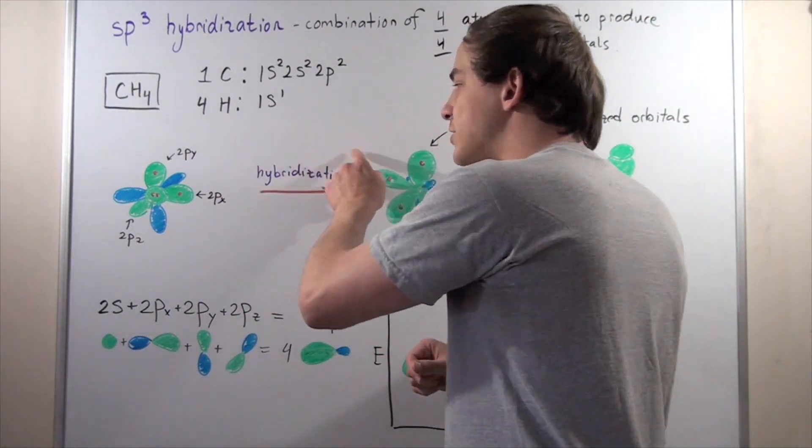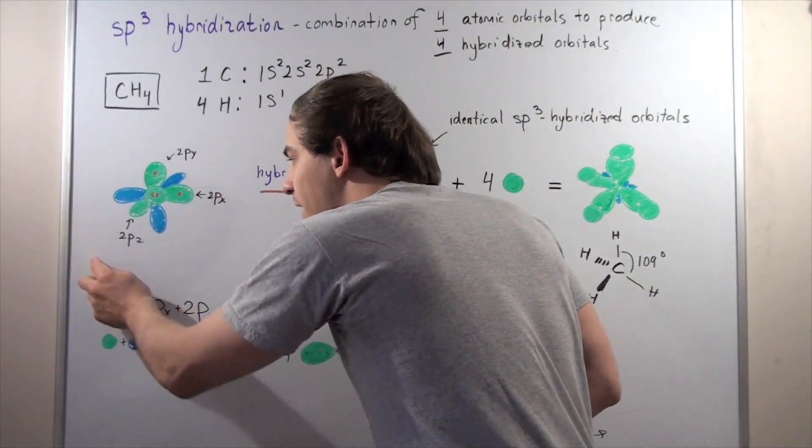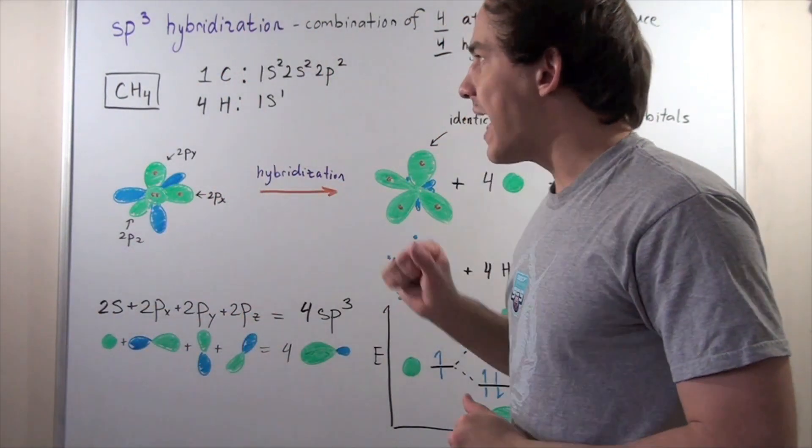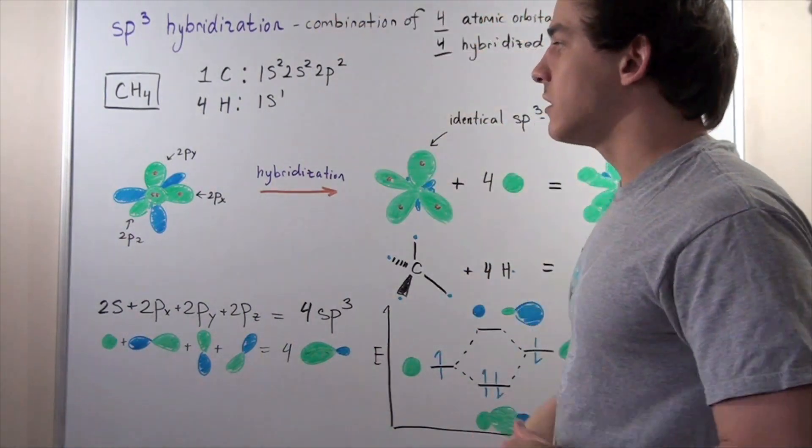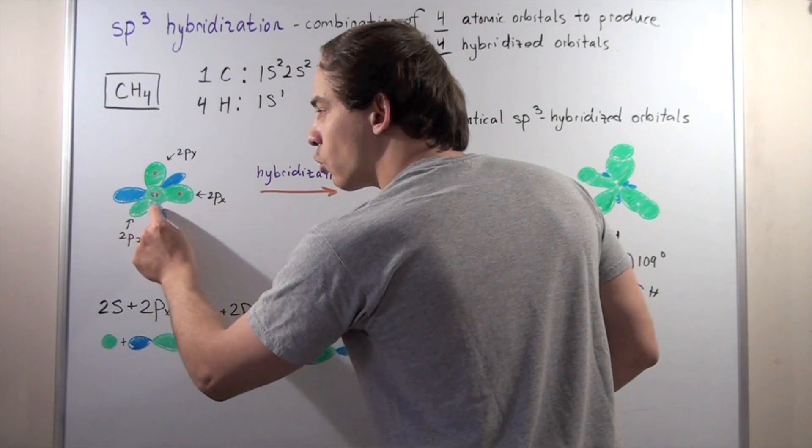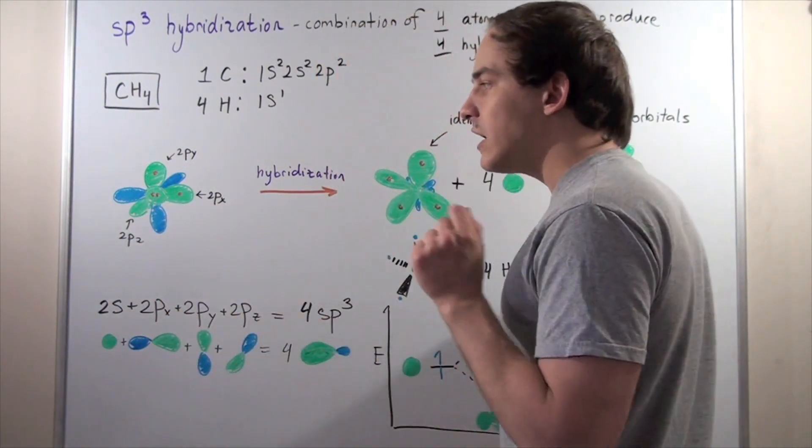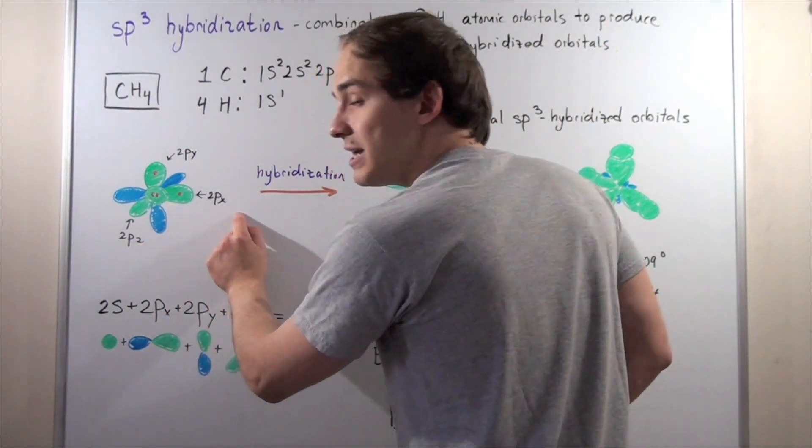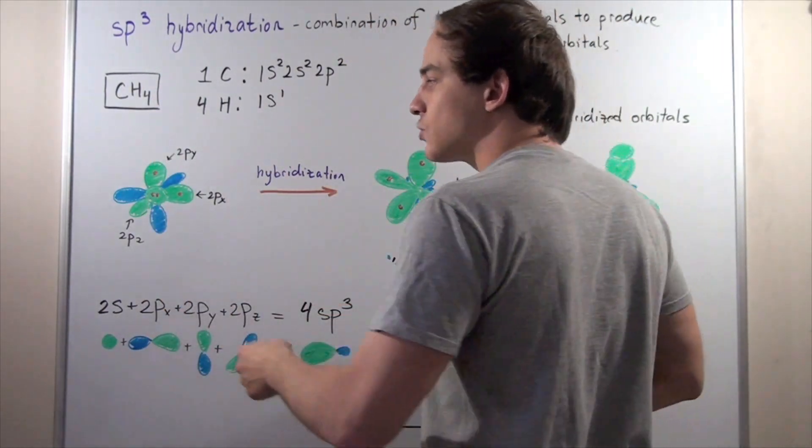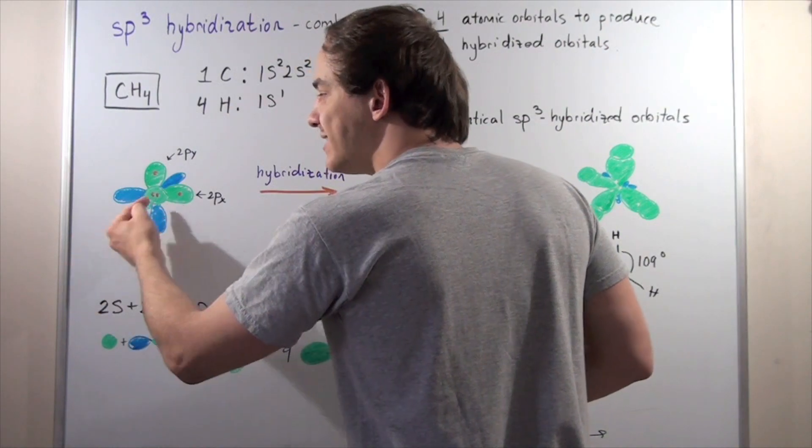Before hybridization took place, we have the following picture of our carbon atom. The carbon atom has four unpaired electrons: two unpaired electrons are in the 2s orbitals shown here, one unpaired electron is in the 2px, one unpaired electron is in the 2py, and no electrons are in the 2pz.